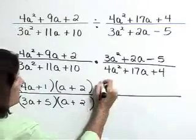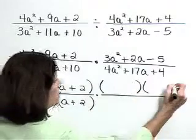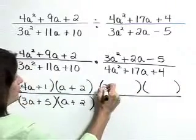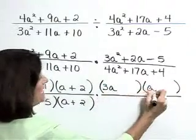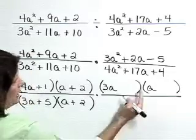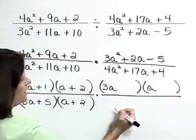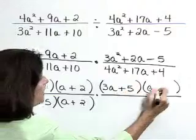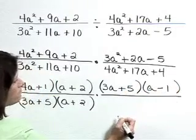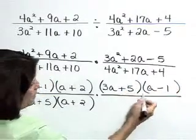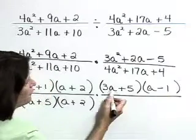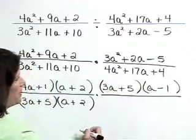On to our second rational expression, factoring the numerator. Our first terms are going to have to be 3a and a. Factors of negative 5 that are going to work in here are a plus 5 and a minus 1. Checking 5a and a negative 3a gives 2a, so that's correct.